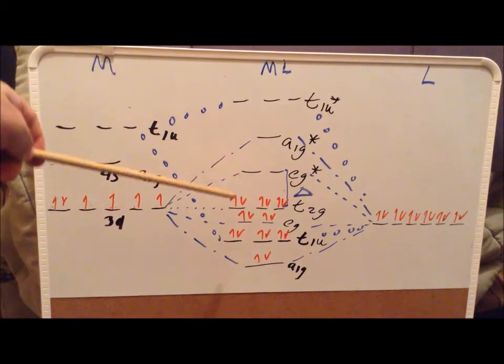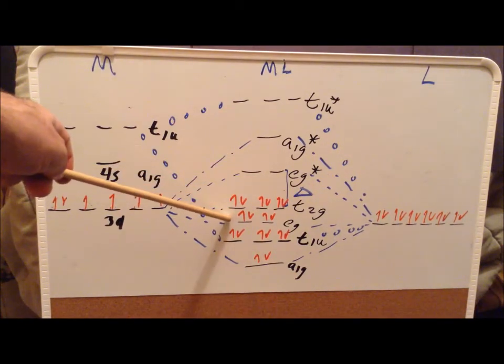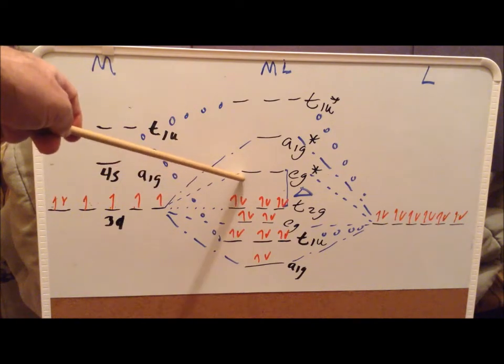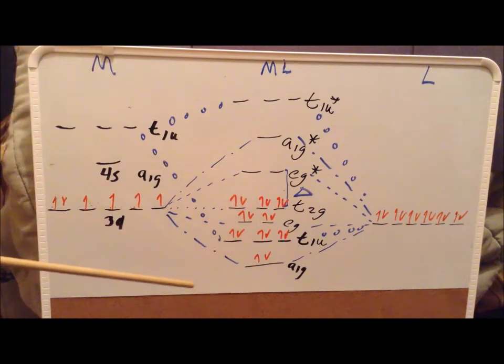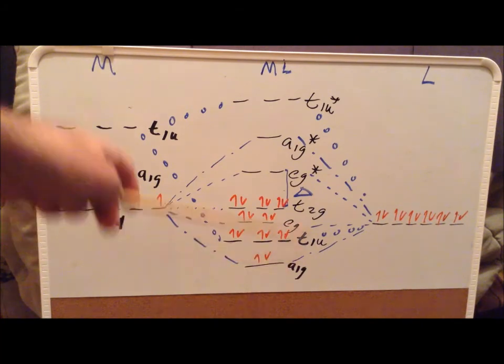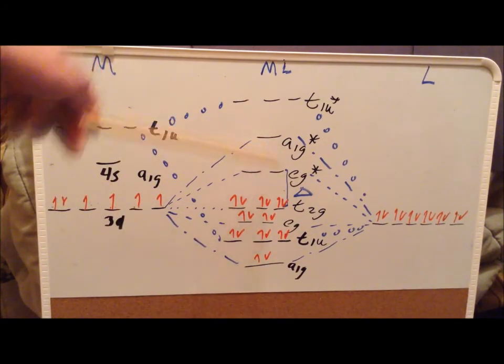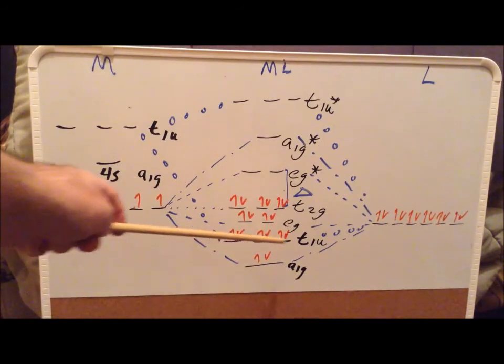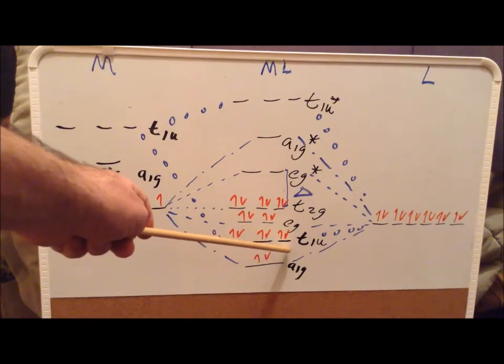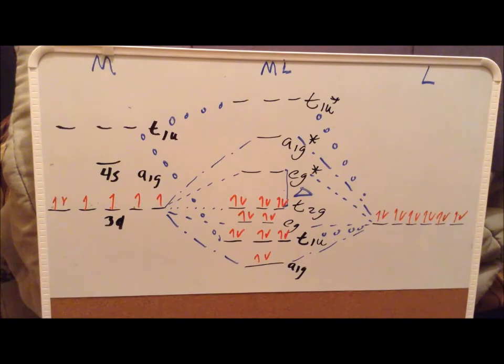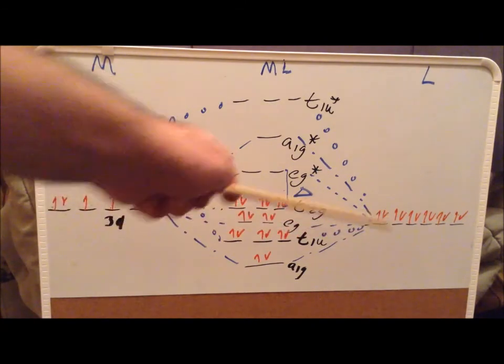We end up with a bonding combination Eg and an antibonding Eg star combination. At the lowest level, we end up with an A1g bonding and a very high energy A1g star antibonding combination. We saw that we also have a triplet degenerate T1u combination. That's the combination that combines with the p orbitals on the metal, and we have three group orbitals with that symmetry.